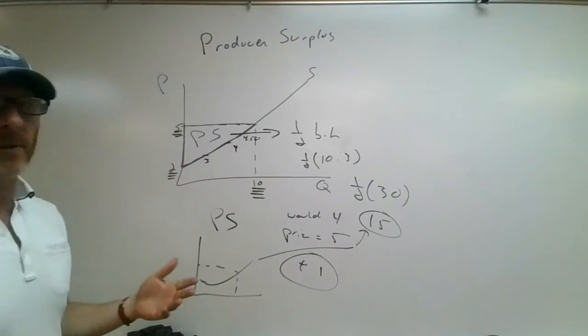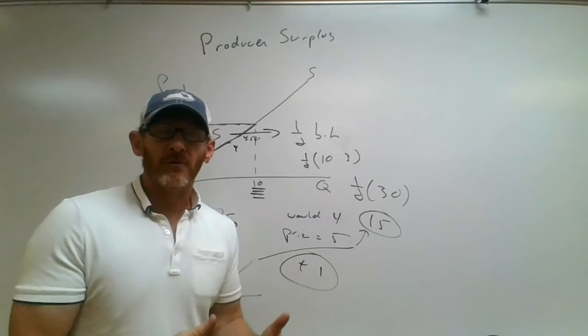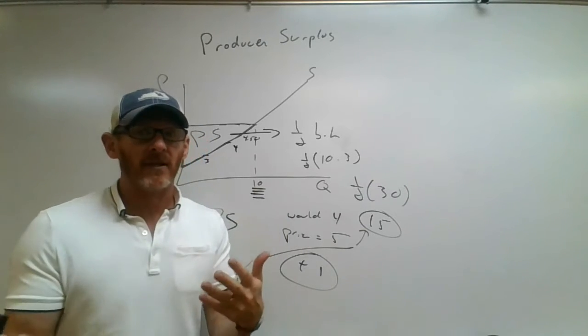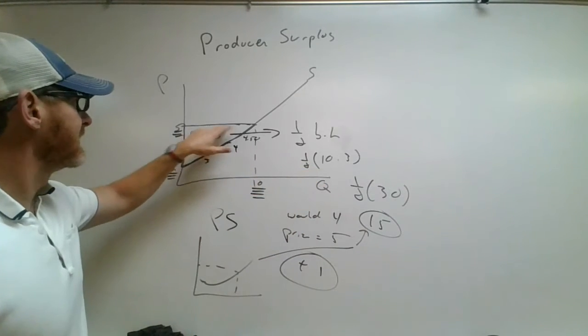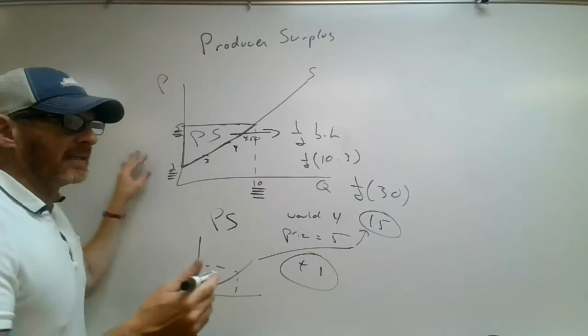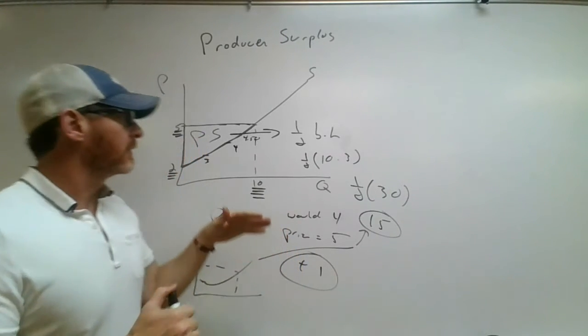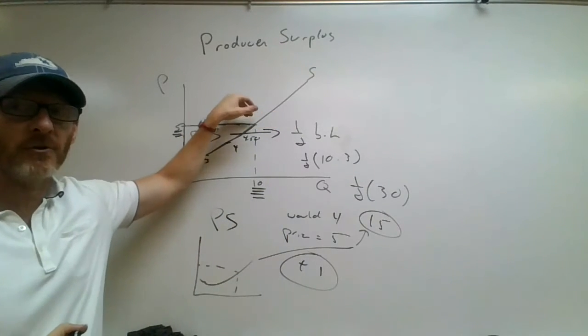So producer surplus is not the same as consumer surplus. In fact, it's kind of like the opposite. It's how much producers are coming out ahead when the price is whatever the market price is. Sort of like in consumer surplus, when the price changes, that also changes the quantity, and it also changes the producer surplus.